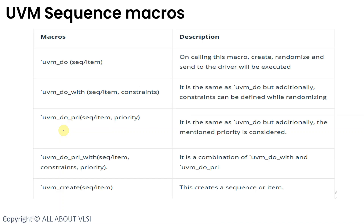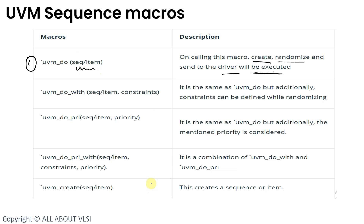Let us try to understand the UVM sequence macros. The first type of macro is `uvm_do, where you pass your sequence item. When we call this macro in the body task, it is going to create the instance, randomize it, and send it to the driver. In a single line, all three operations are handled: creating the instance, randomizing, and sending to the driver.